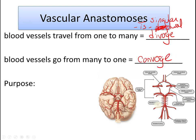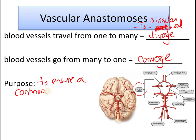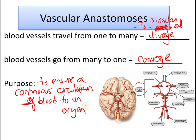You can see an example of that here — this is called the Circle of Willis. The Circle of Willis is our arteries that circle the brain and branch off into many. The purpose of this is to ensure a continuous circulation of blood to an organ, so that if one blood vessel gets clogged, there's another one also bringing blood to that organ.